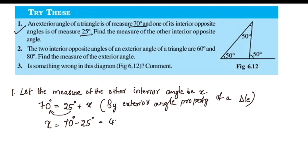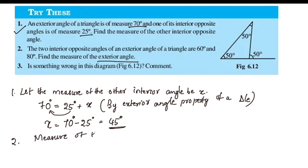Exterior angle property of a triangle. The two interior opposite angles of an exterior angle of a triangle are 60 and 80. Find the measure of the exterior angle.